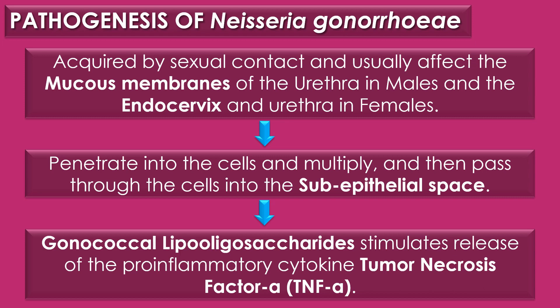Pathogenesis of gonococci: Neisseria gonorrhoeae infections are acquired by sexual contact and usually affect the mucous membrane of the urethra in males, and the endocervix and urethra in females. Neisseria gonorrhoeae is not able to survive in dry regions and colonizes only in the sticky mucous membrane. Gonococci attach to the mucous cells, penetrate into the cells, multiply, and then pass through the cells into the sub-epithelial space where the infection is established. Pili, PORB, and OPA proteins mediate attachment and penetration into the host cells.